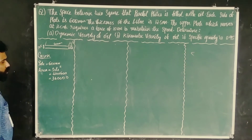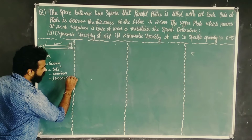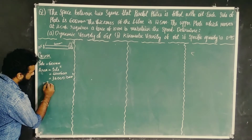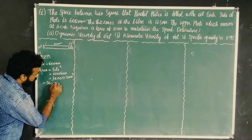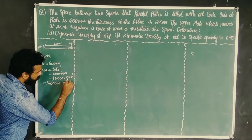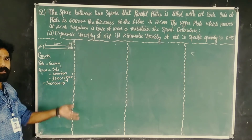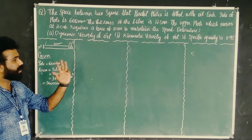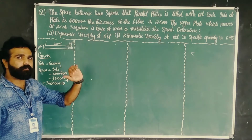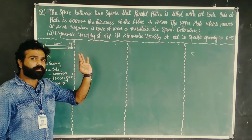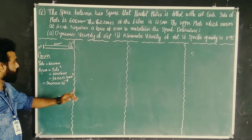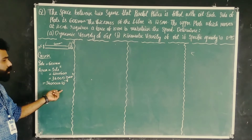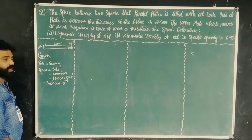That gives 360,000 mm². The standard unit is meter square. Since 1 mm = 10⁻³ m, squaring gives 10⁻⁶, so the area is 360,000 × 10⁻⁶ = 0.36 m².